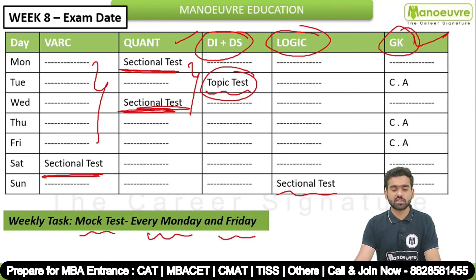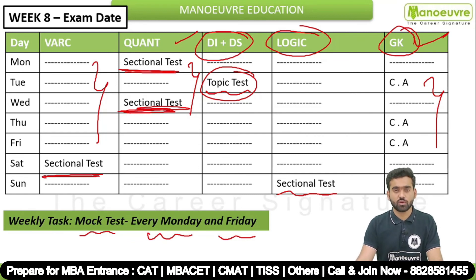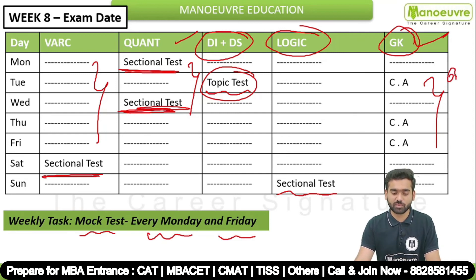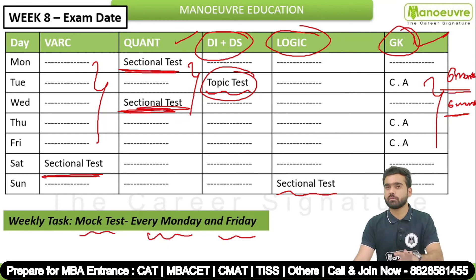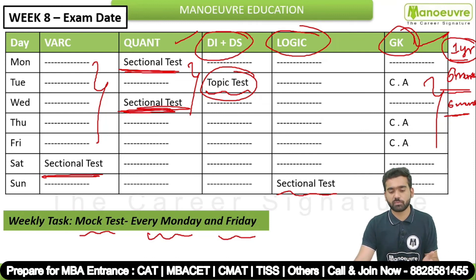For GK, I mentioned current affairs — so you have to prepare current affairs on Tuesday, Thursday, and Friday. Three days you have to prepare current affairs, till your examination. Last six months of current affairs are compulsory, and for the previous six months you can do as per your capacity. But I suggest that for safe side, prepare the last one year. If time is less and preparation is not complete, then just prepare the last six months.